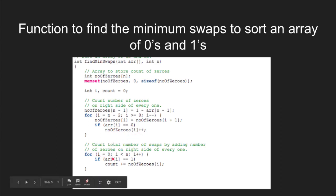Then we calculate the number of swaps by adding the number of zeros on the right-hand side of every one. At last, we return the count, i.e., the number of swaps.